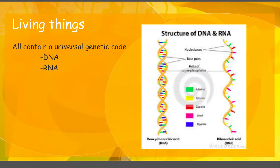Our third characteristic is that all living things have a universal genetic code. All living things have DNA and RNA. DNA is basically our instruction set — we have a whole unit on it. But that banana or apple that you ate for breakfast has the exact same kind of DNA; it's just in a different order. So all living things will have DNA.